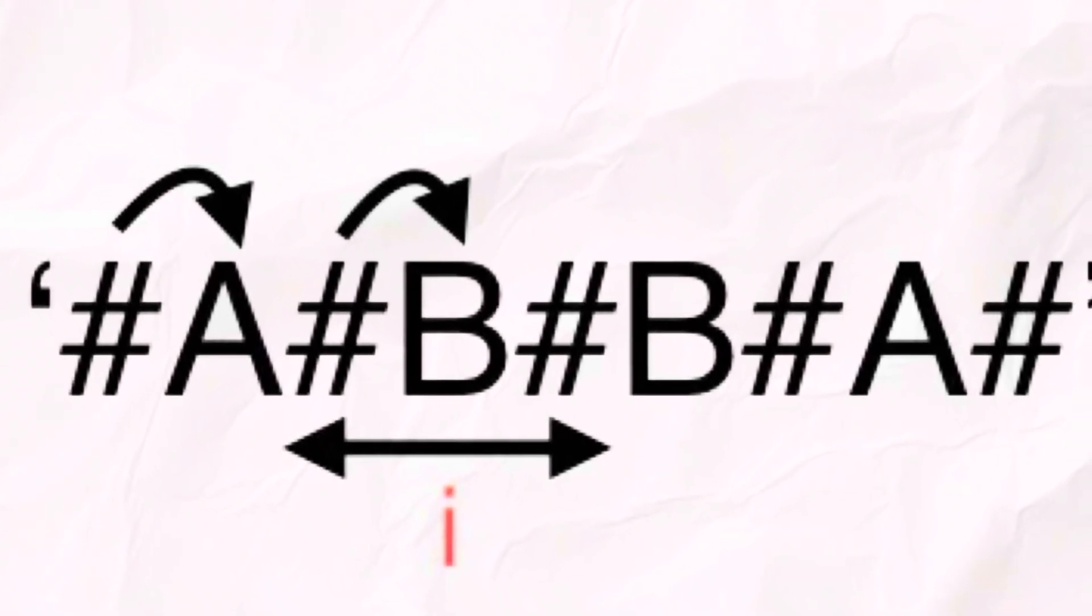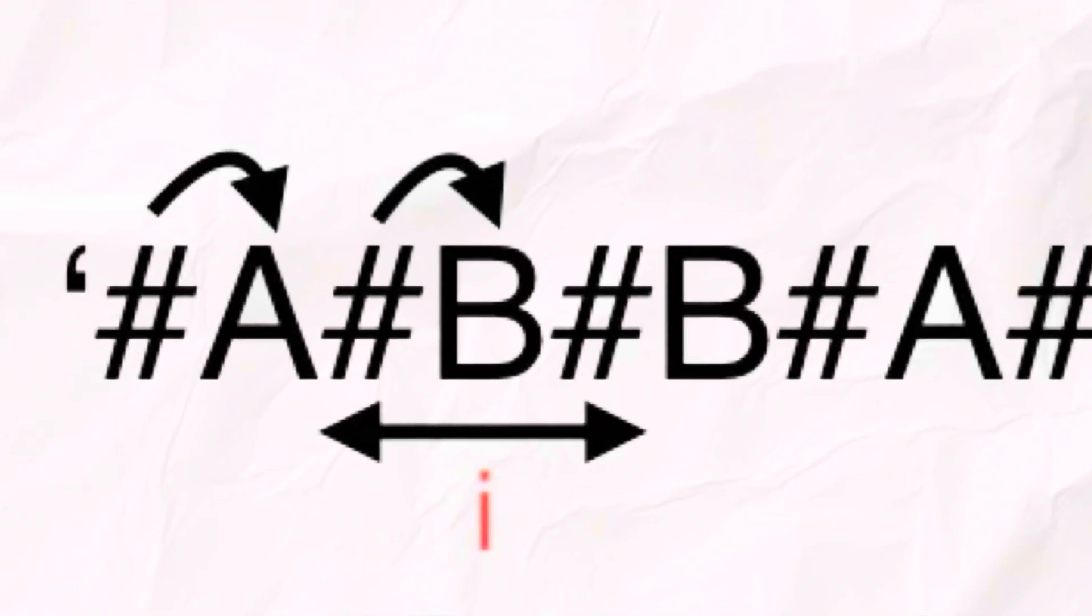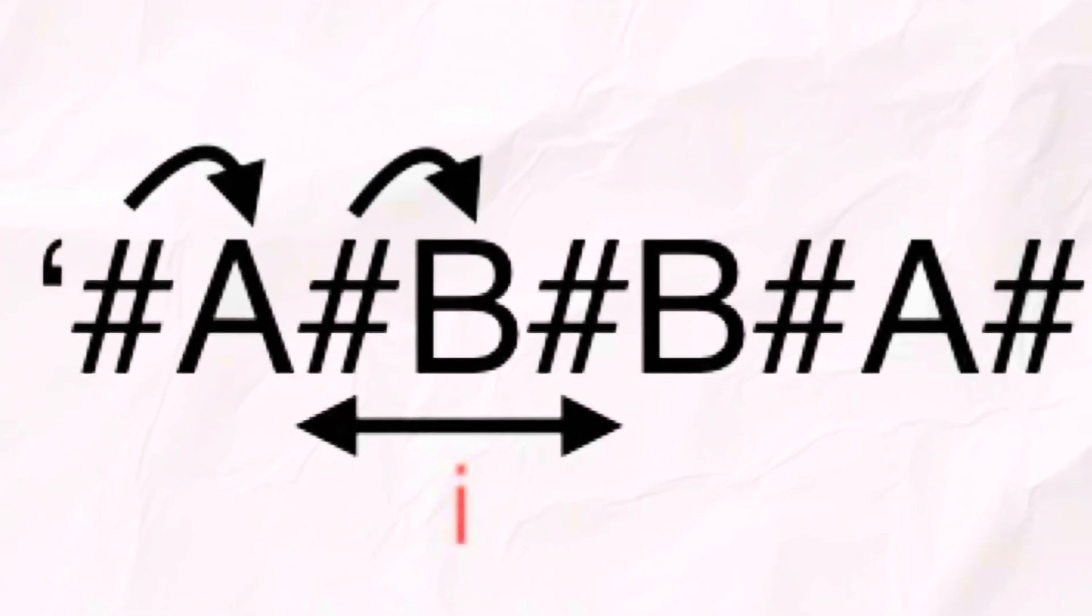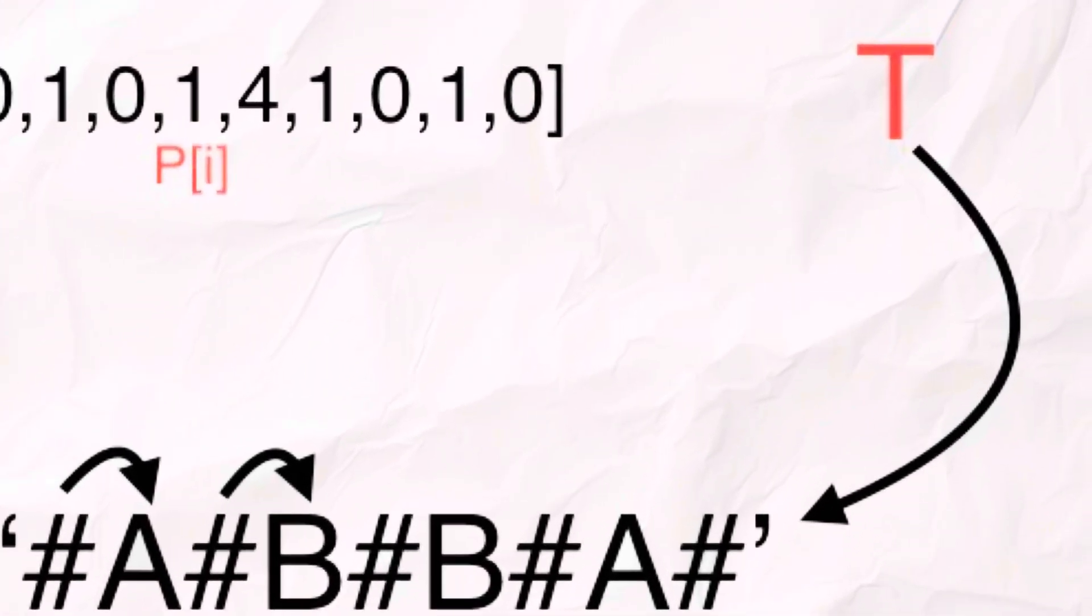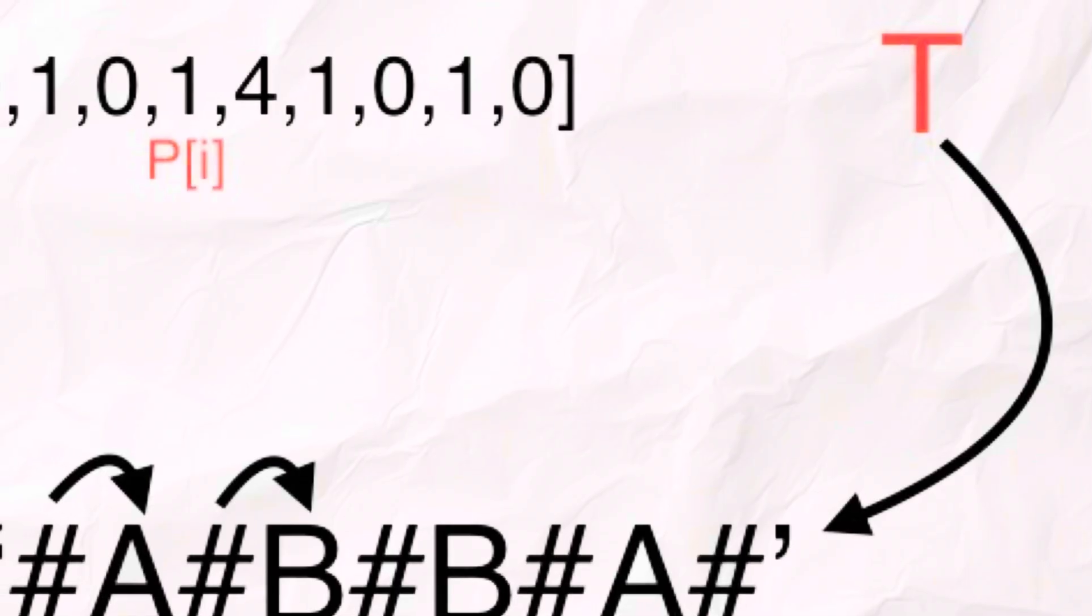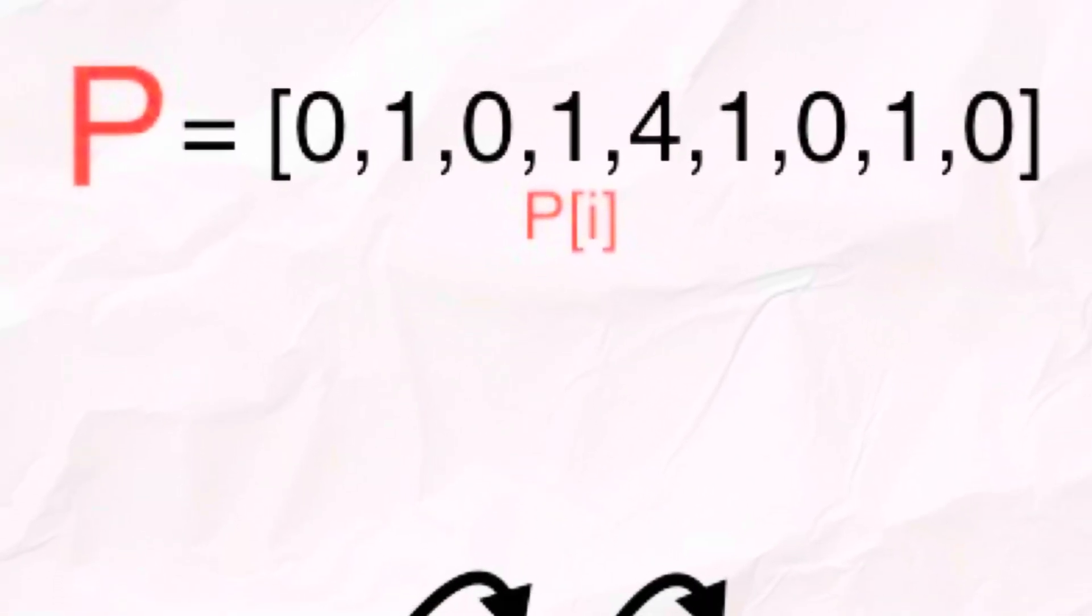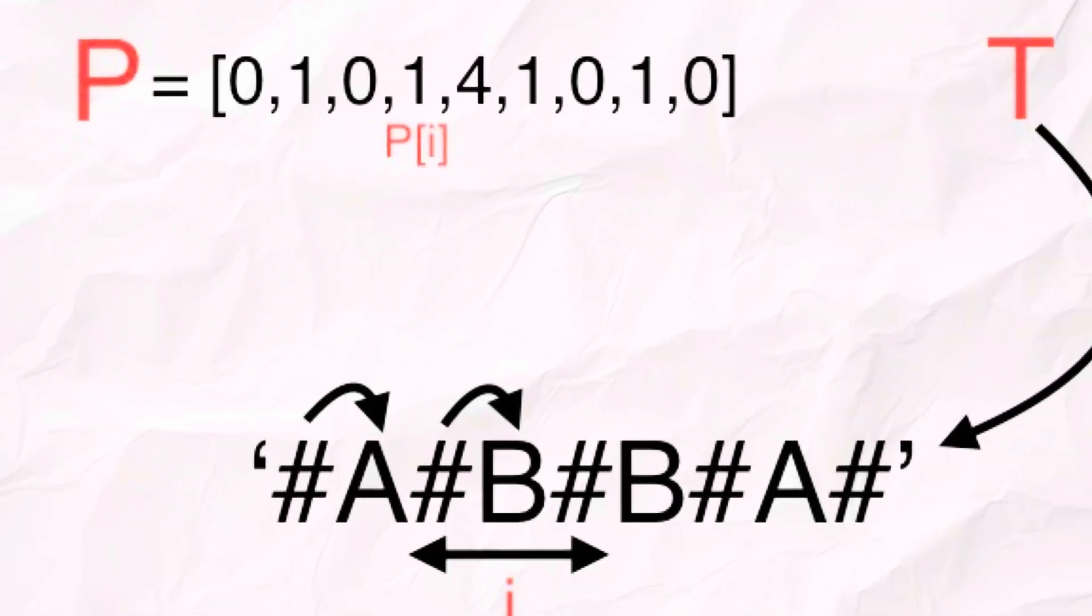So now we scan the transformed string from left to right. For each position i, we try to expand outward as far as we can while the characters on both sides match. Just like checking for palindrome centered at i. So we iterate through the string character by character and build an array p where p[i] holds the radius of the longest palindrome centered at position i.